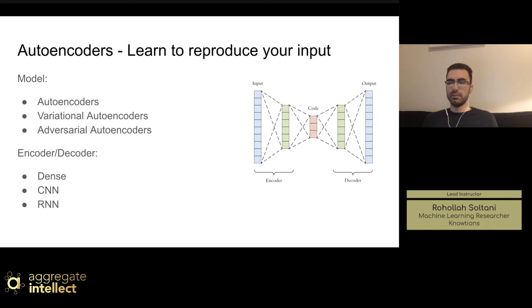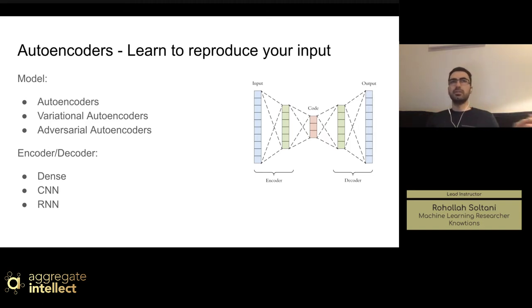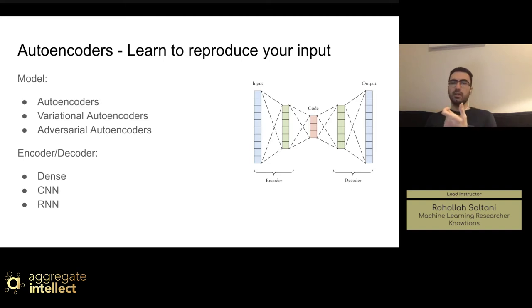The choice of autoencoder architecture depends on the nature of the data. Convolutional neural networks are preferred for image datasets, while RNN-based models are better for sequential data. Depending on your data, you can pick a different encoder or decoder. Basically you can use autoencoders for any sequential data, images, or any kind of data, compress it, and then have a fixed-size representation of your input.